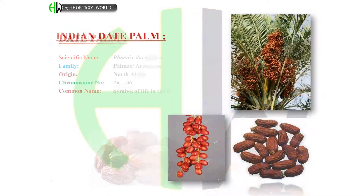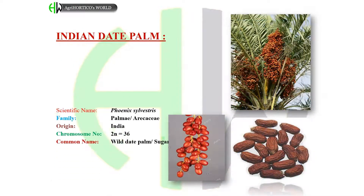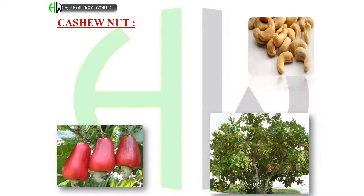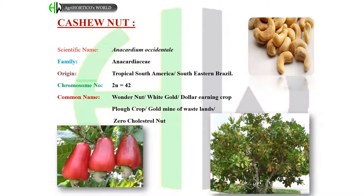Indian date palm: scientific name: Phoenix sylvestris. Family: Arecaceae. Origin: India. Chromosome number: 2n = 36. Common names: Wild date palm and sugar palm. Cashew nut: scientific name: Anacardium occidentale. Family: Anacardiaceae. Origin: Tropical South America or southeastern Brazil.